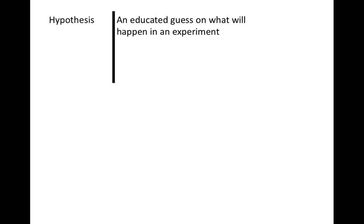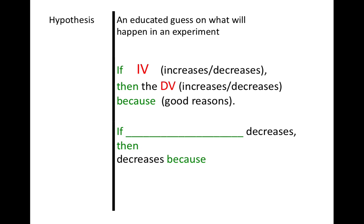When you're doing your hypothesis, the best way to word it would be: if the independent variable increases or decreases, then the DV either increases or decreases. You have to choose how it's affected for educated reasons. Just to give you an example, not that you have to write this down, an example with the water would be: if the amount the plant is watered decreases, so I'm choosing decreases...